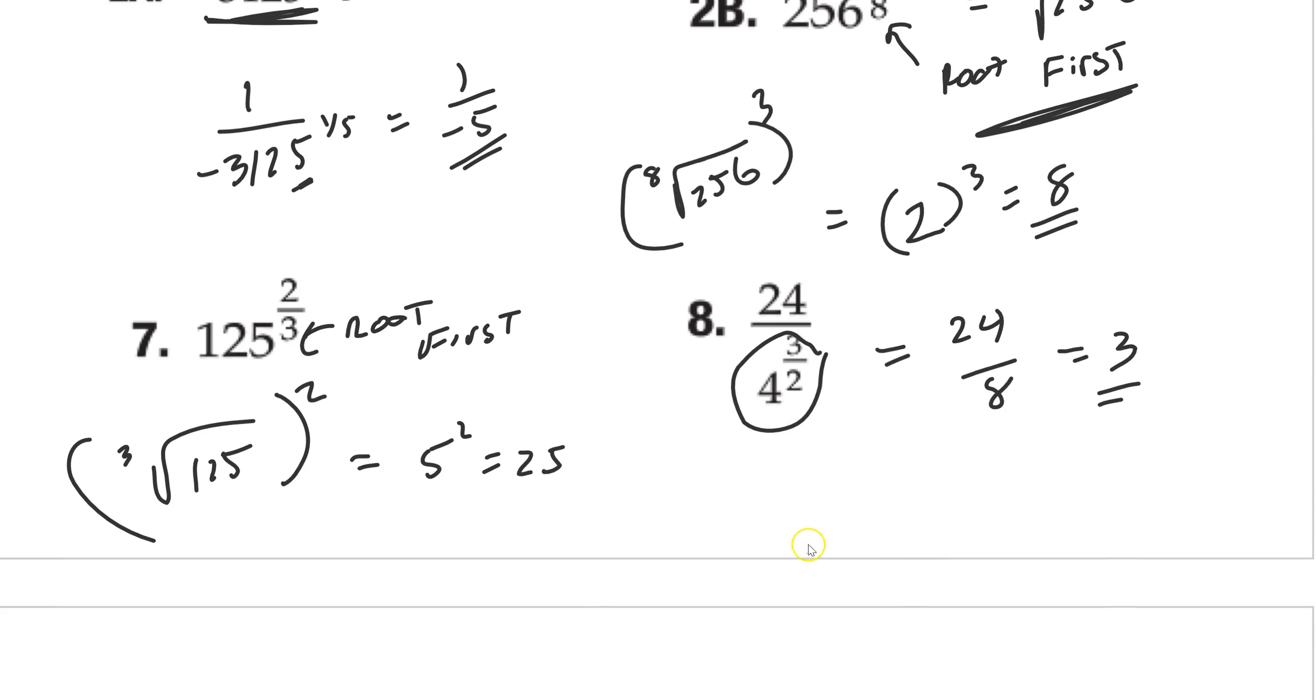So that's how you do those problems. You always do the root first. If I gave you something like 27 to the 2 thirds, you'd be like okay, cube root of 27. We're going to square that answer. Cube root of 27 is 3. 3 squared is 9. So that's how you do those.